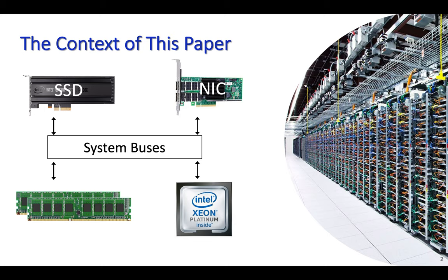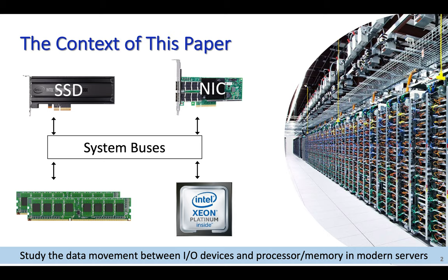Before I start the presentation, let me explain the context of this paper first. In this work, we study the interactions between I/O devices, processor and memory in modern servers. This paper can be divided into two parts. The first part serves as a tutorial for Intel Data Direct I/O technology and how it affects system performance. In the second part, we discuss the inaccuracies in GEM5's I/O modeling and implement a model that accurately simulates a server with DDIO technology enabled.